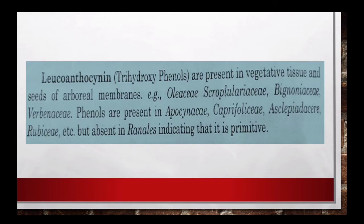Leucoanthocyanin trihydroxyphenol है, यह vegetative tissue और seeds में पाया जाता है woody members जैसे Oleaceae, Scrophulariaceae, Bignoniaceae, Verbenaceae में। Phenols Euphorbiaceae, Asclepiadaceae, Rubiaceae में भी पाए जाते हैं, लेकिन Ranales में absent होते हैं। तो यह indicate करता है कि Ranales जो हैं वो primitive हैं।